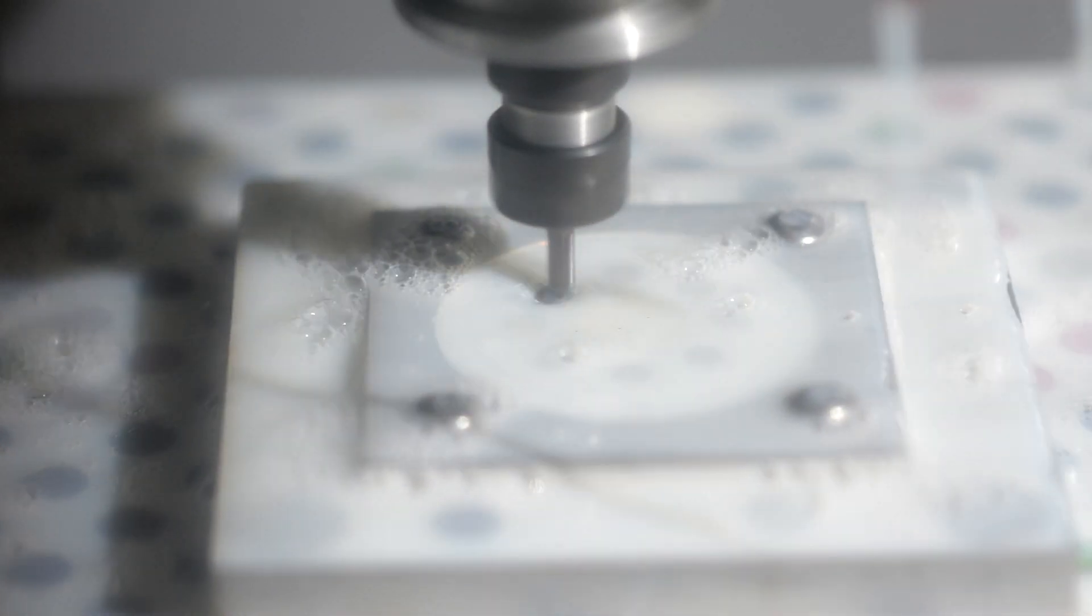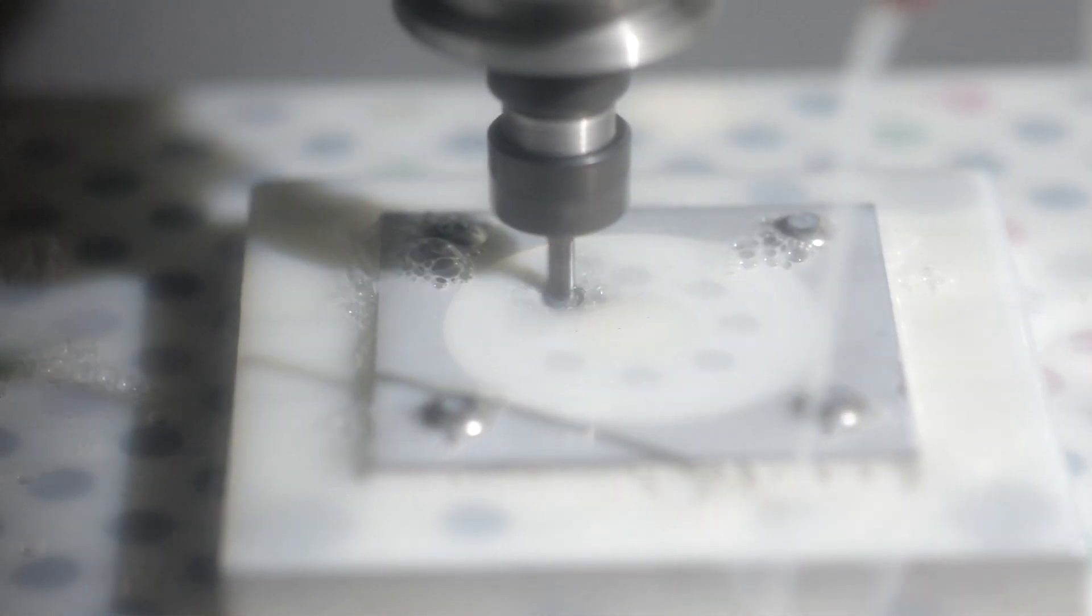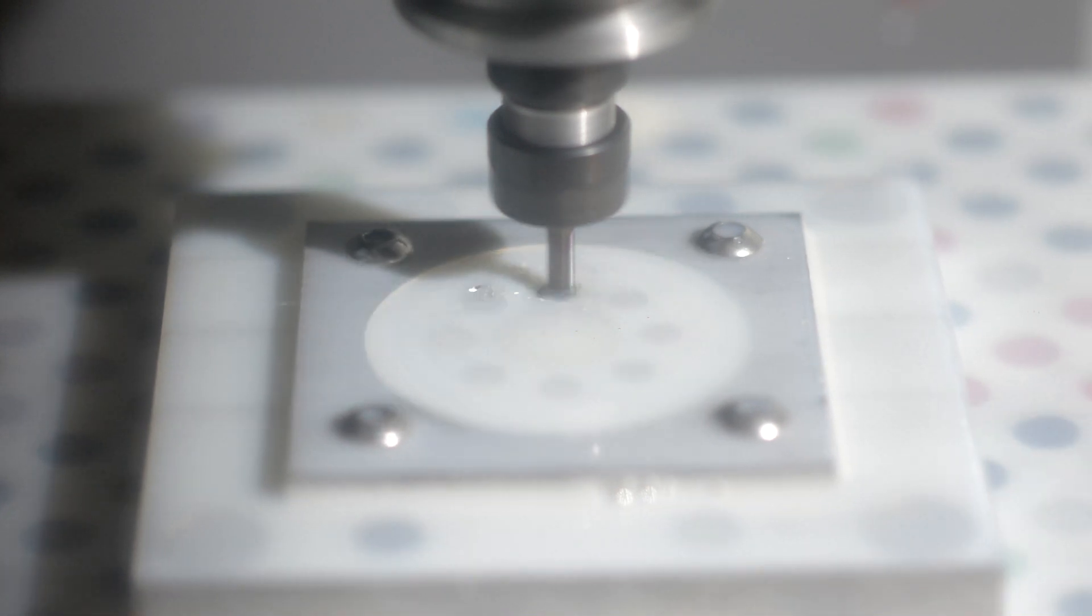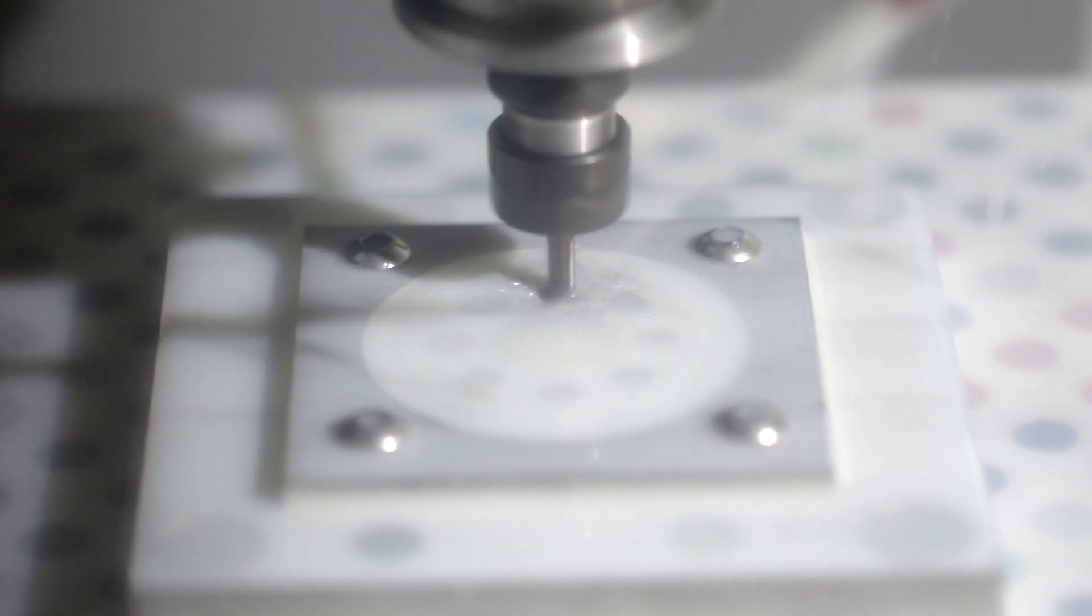Then I repeat essentially the same steps for the eight outer holes I drilled earlier. These nine millimeter holes require a H7 tolerance which you typically get with a reamer, however I don't own a nine millimeter reamer so interpolating the holes is the best option in this case.